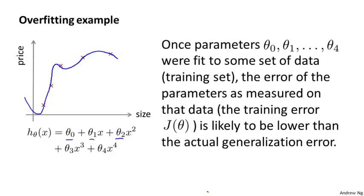The more general principle is that once your parameters were fit to some set of data — maybe the training set or maybe something else — the error of your hypothesis as measured on that same data set, such as the training error, is unlikely to be a good estimate of your actual generalization error; that is, how well the hypothesis will generalize to new examples.